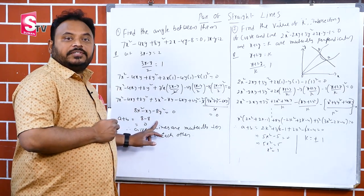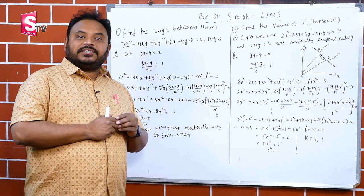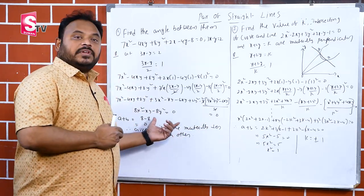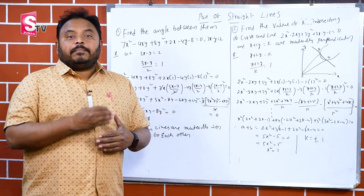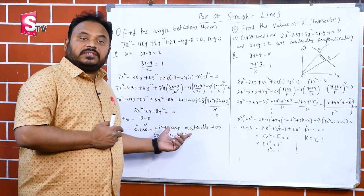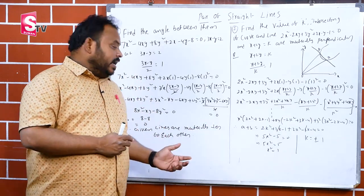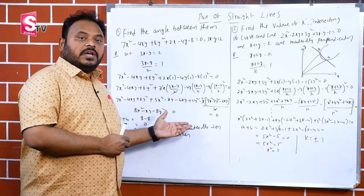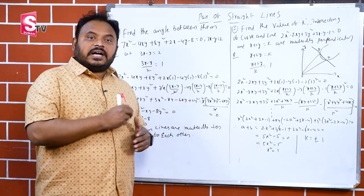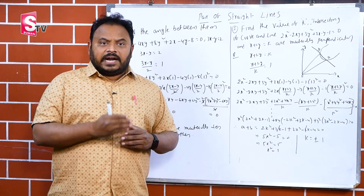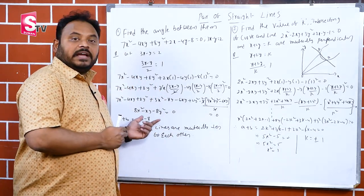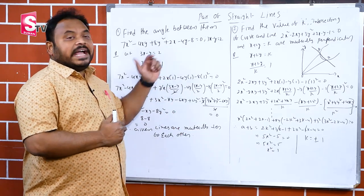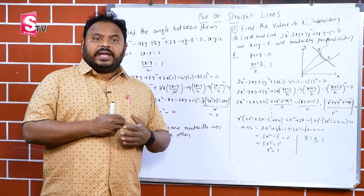Here, a plus b equals 0. Since a plus b equals 0, those two lines are mutually perpendicular.